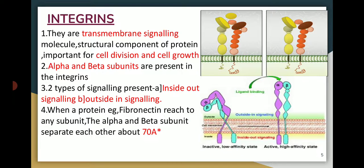The next important adhesion molecule is integrins. Integrins are also a transmembrane signaling molecule and are very important for cell division as well as cell growth. Two subunits are present for integrin: the alpha subunit and the beta subunit. Two types of signaling are present: inside-out signaling and outside-in signaling.